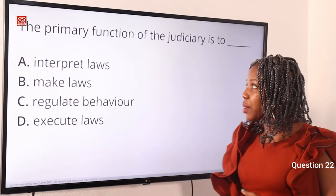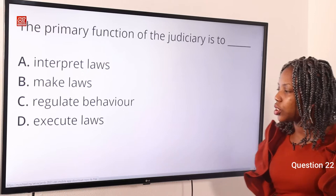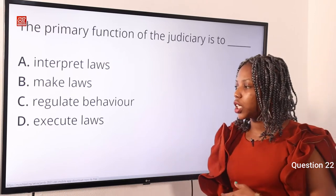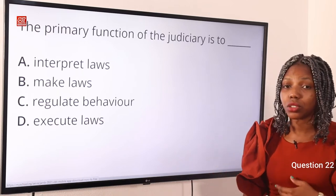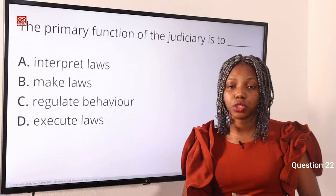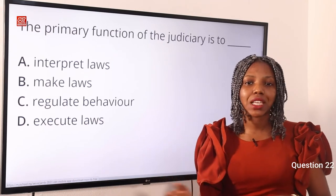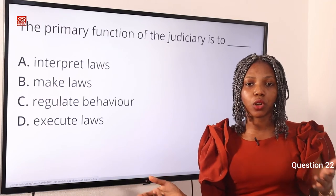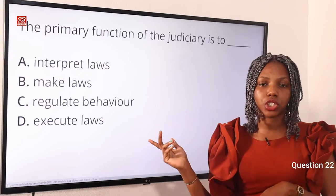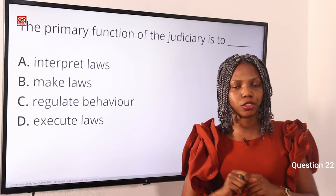Question 22. The primary function of the judiciary is to dash. Option A, interpret laws. Option B, make laws. Option C, regulate behavior. Option D, execute laws. The answer is interpret laws — Option A is correct. Do not forget that the judiciary is one of the three arms of government. We have the legislative, which makes law; the executive, which implements law; and the judiciary, which interprets law.